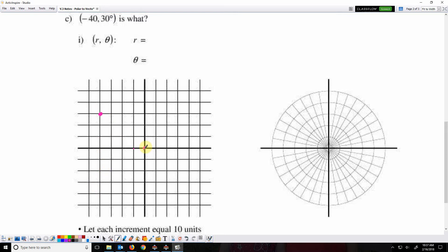But as a vector, that means I've got the initial side here at the origin, the terminal side at negative 40, 30, and the vector looks like that.